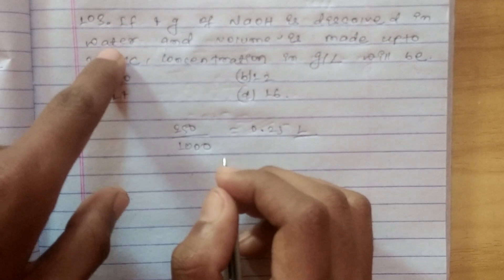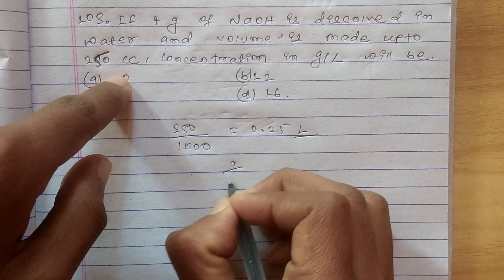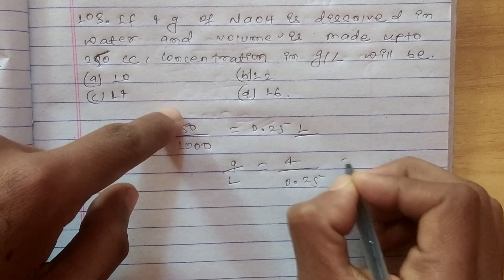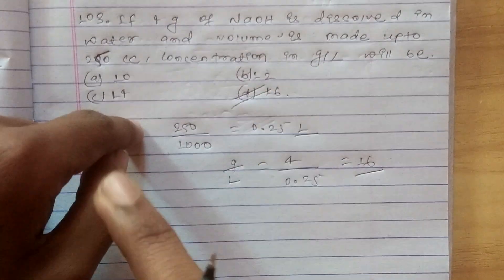Now, we have 4 grams, so grams per liter will be 4 divided by 0.25, that is 16. Option D is 16, this is the correct answer for this question.